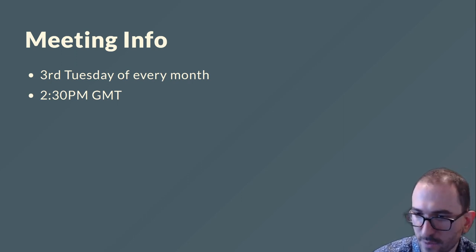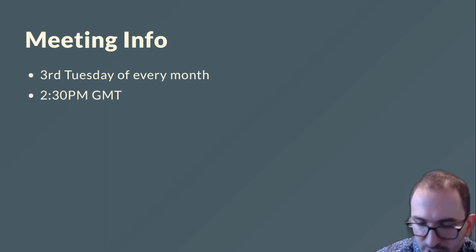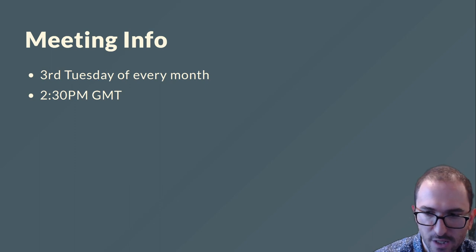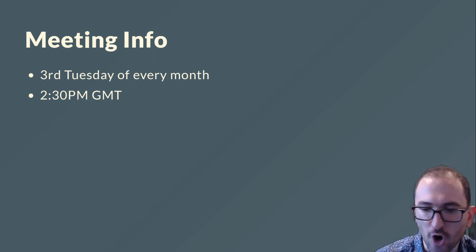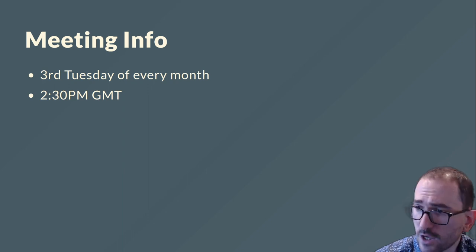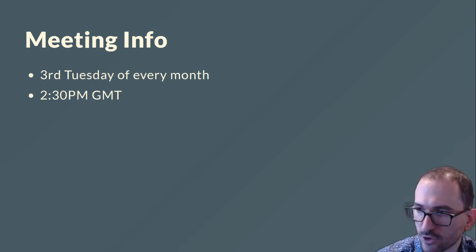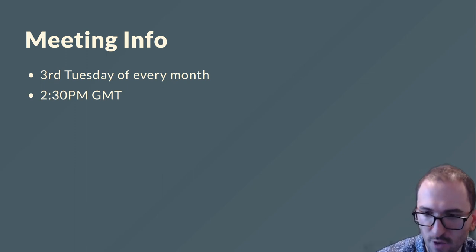We hope that you've gotten some value from attending this introduction on the Financial Services User Group, and maybe we have convinced a few of you to start joining our meetings. We're looking for other financial services companies to join our meetings, but also for vendors and project maintainers who are interested in better understanding financial services use cases. The meetings happen the third Tuesday of every month at 2:30 GMT. Feel free to reach out if you want an invite to the group. We are currently still using Slack, GitHub, and Google Docs, so just be aware — that might be a challenge depending on your organization's policies around using those tools.